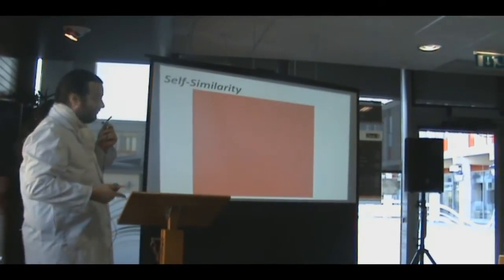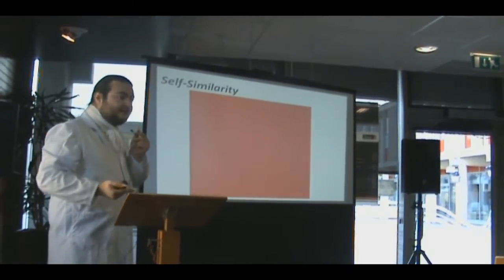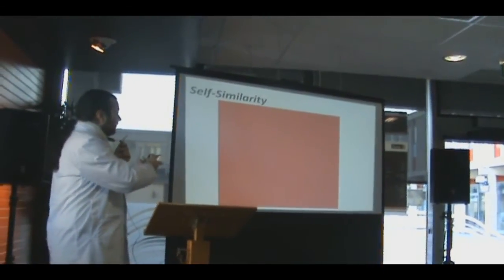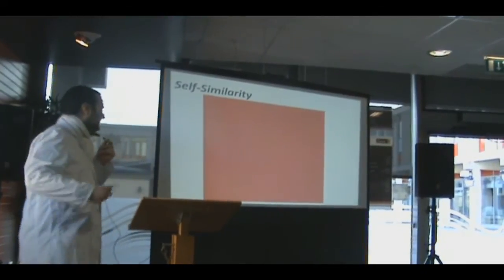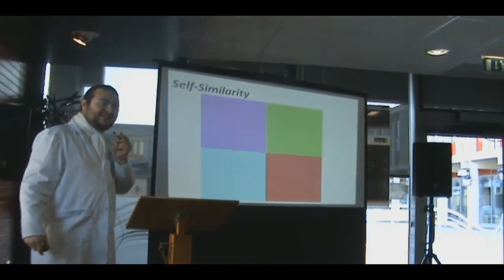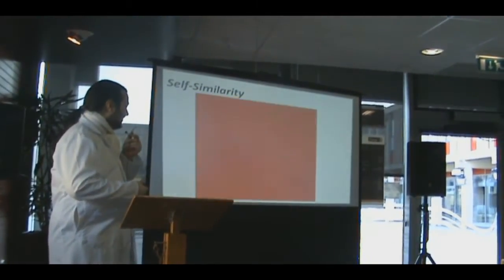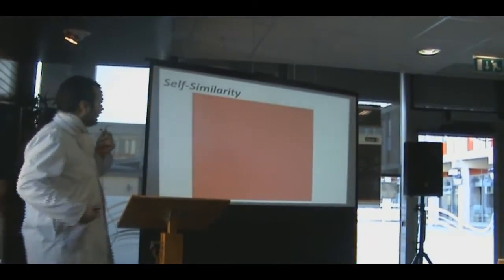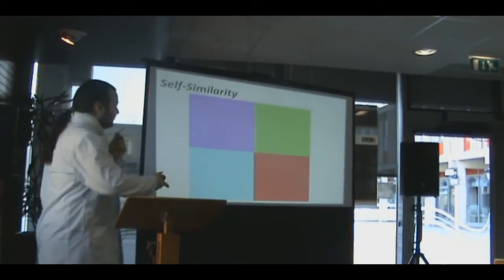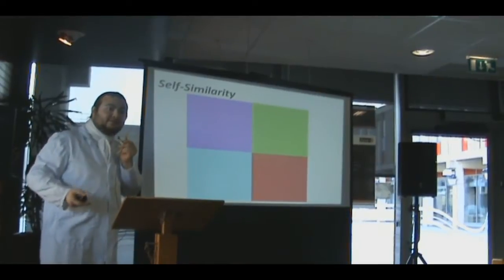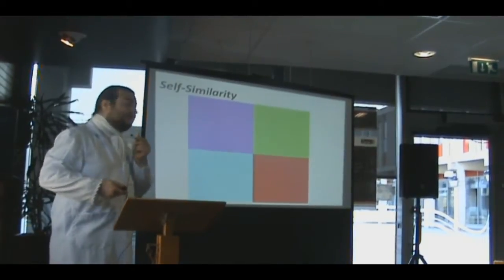The second property is self-similarity. The idea of self-similarity can be easily shown by this picture. Can anyone tell me what that's a picture of? It's four squares, all coloured red. If you colour all four squares red, there's no way of knowing. This is the idea of self-similarity — before I showed you that there are four squares, there was no way for you to know. The idea is that as you zoom in, you get the same thing that you started with.